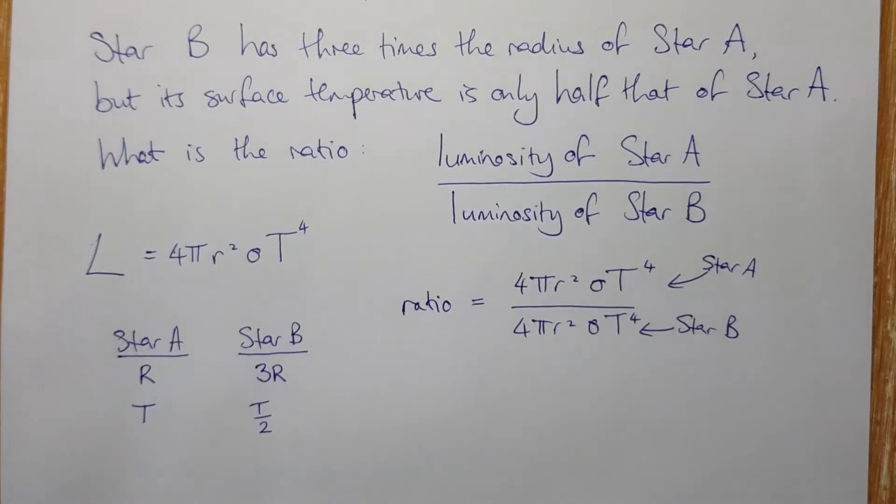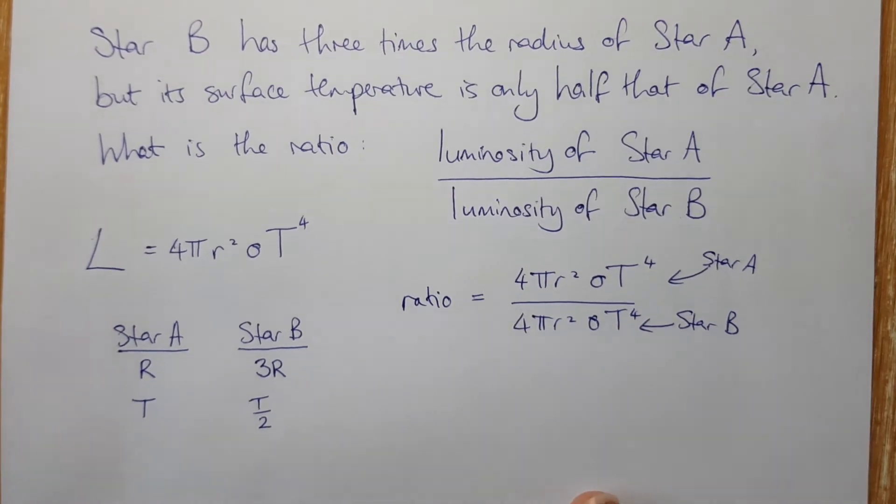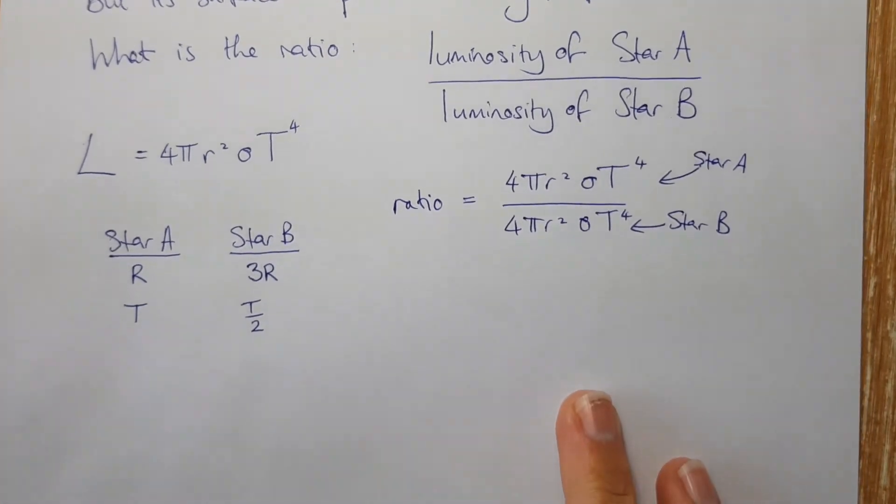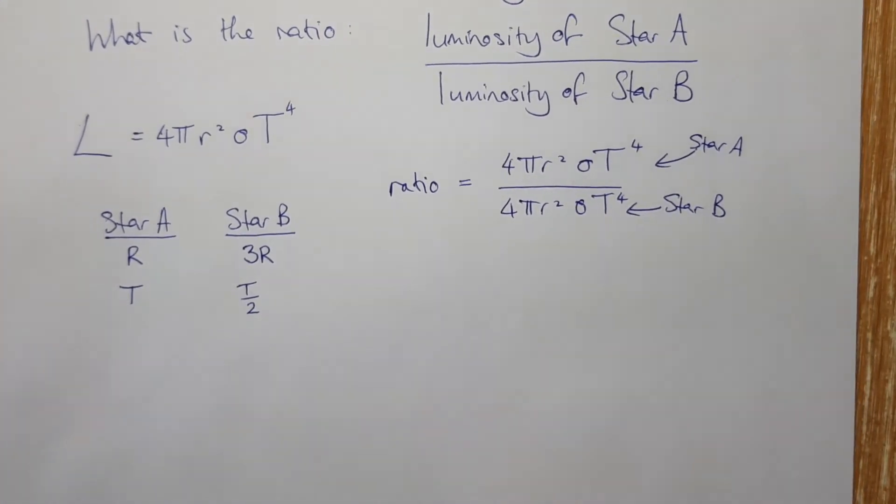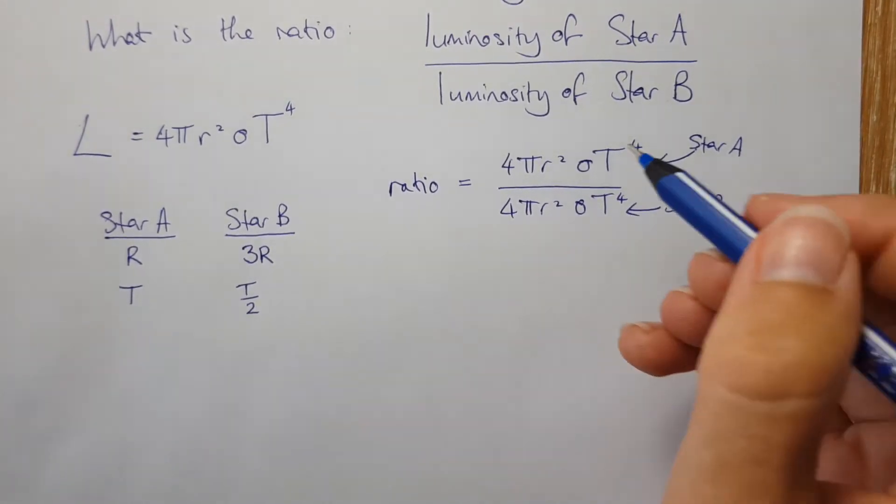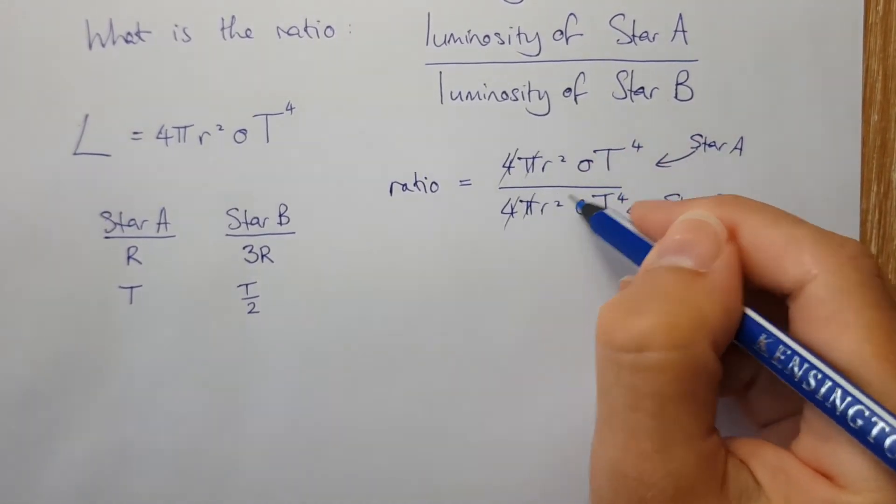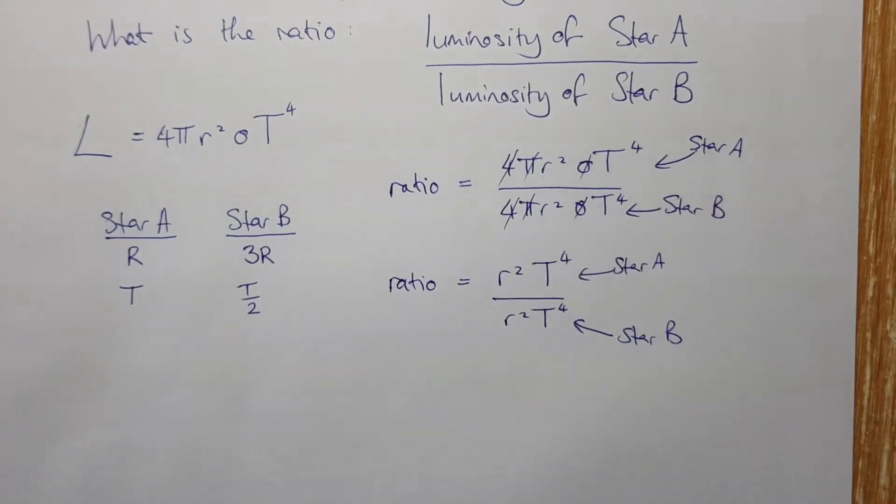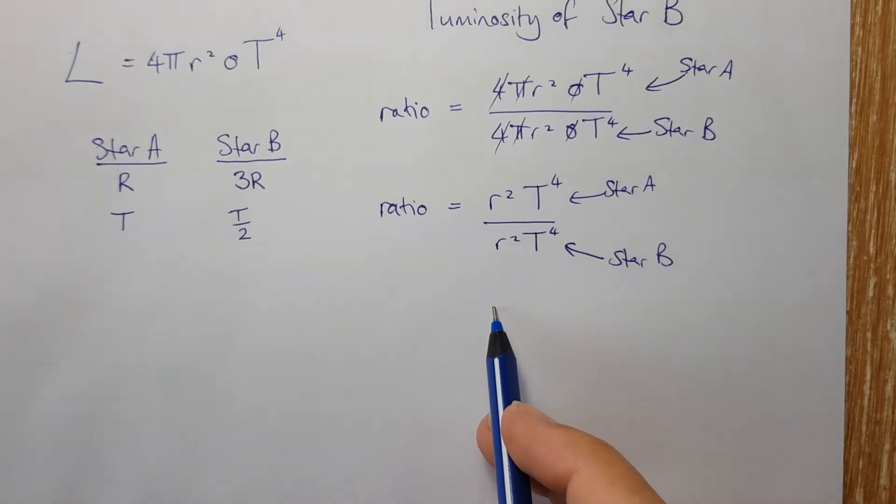Now we're going to put these values into the ratio. But first of all, we're going to cancel everything that we can cancel. So we get rid of all of those. And so now our ratio is a little bit more friendly looking there.